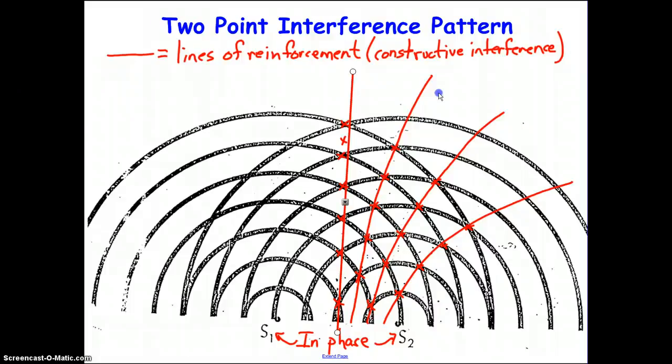I'm now going to use green to indicate lines of destructive interference which are called nodal lines. Again, this is where destructive interference is taking place.